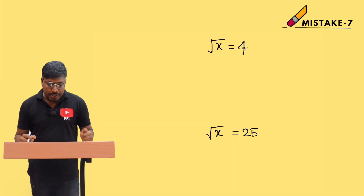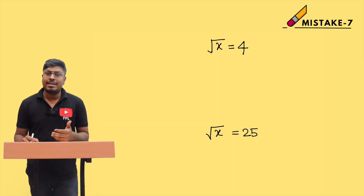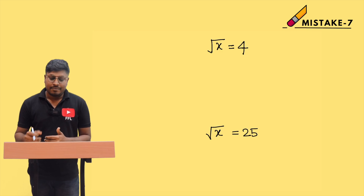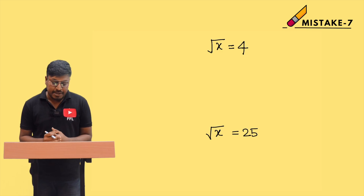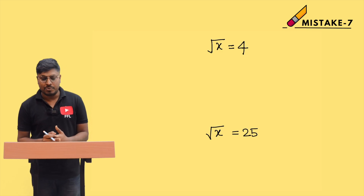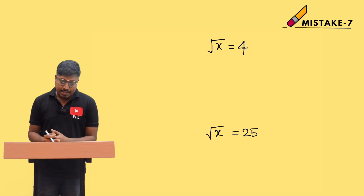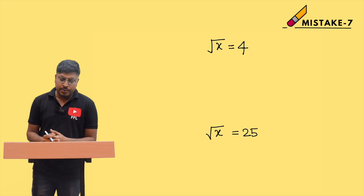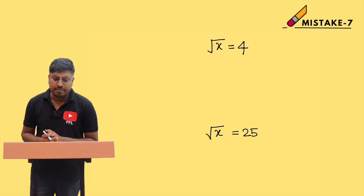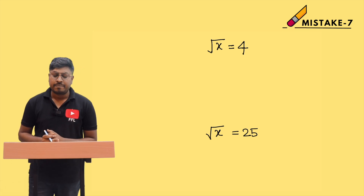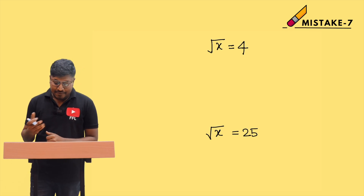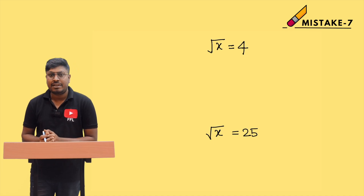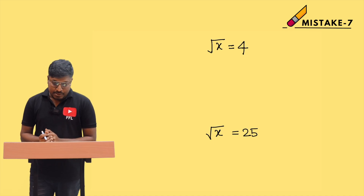Now let me move on to video number 7 in the mistake series, where the question is based on square root or cube root. For example: square root of x is equal to 4, or square root of x is equal to 25.